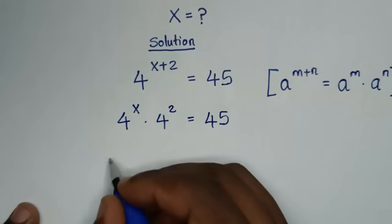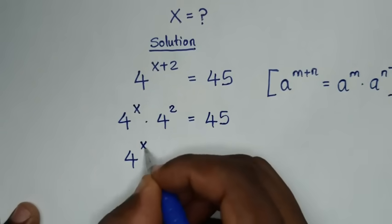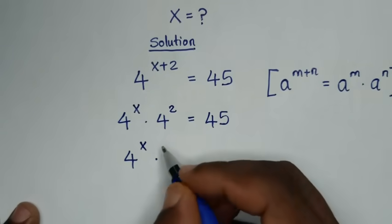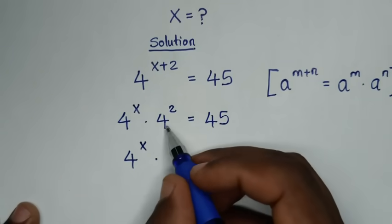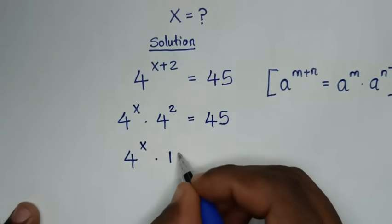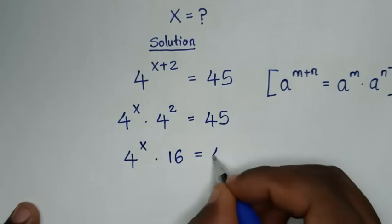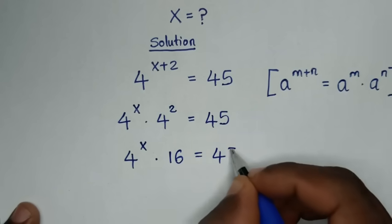Then in the next step, it will be 4 power of x times 4 power of 2, or 4 squared, which is 16, is equal to 45.